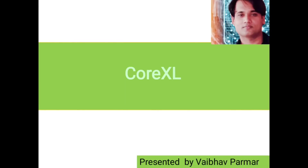Let's understand how Core XL works. Using Core XL, the firewall kernel is replicated multiple times — meaning multiple kernel instances are generated. Each generated kernel instance runs on one core. The instances handle traffic concurrently, and each instance is a complete and independent inspection model. If you want to know more about the inspection model, please refer to my other video content where I have explained how packet inspection works.